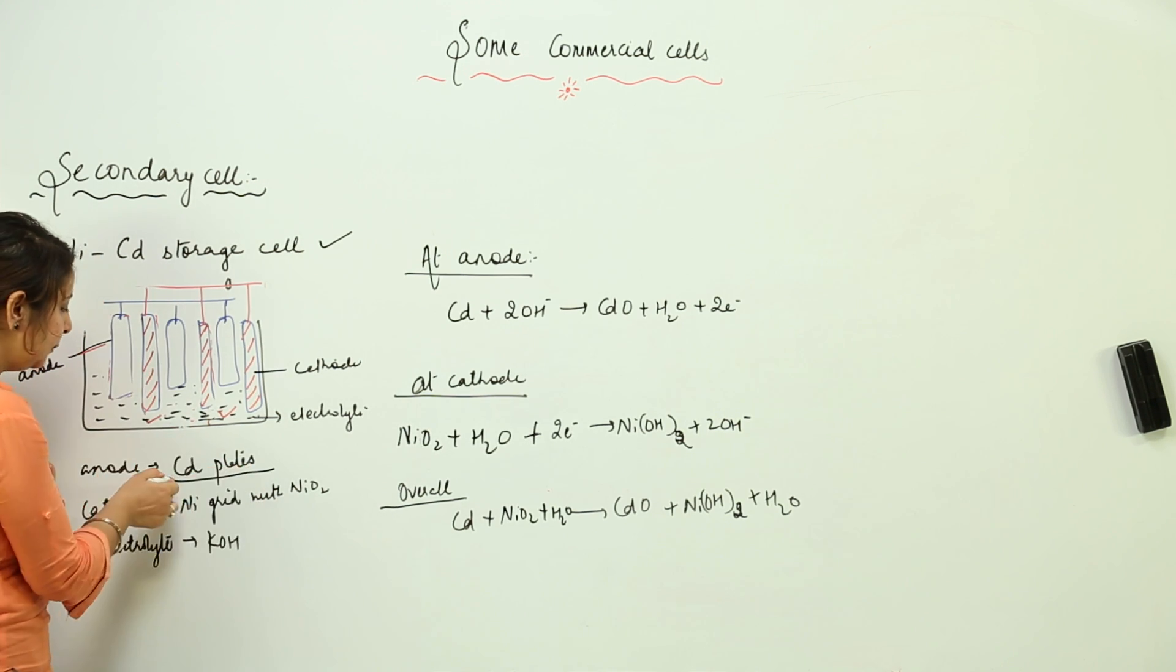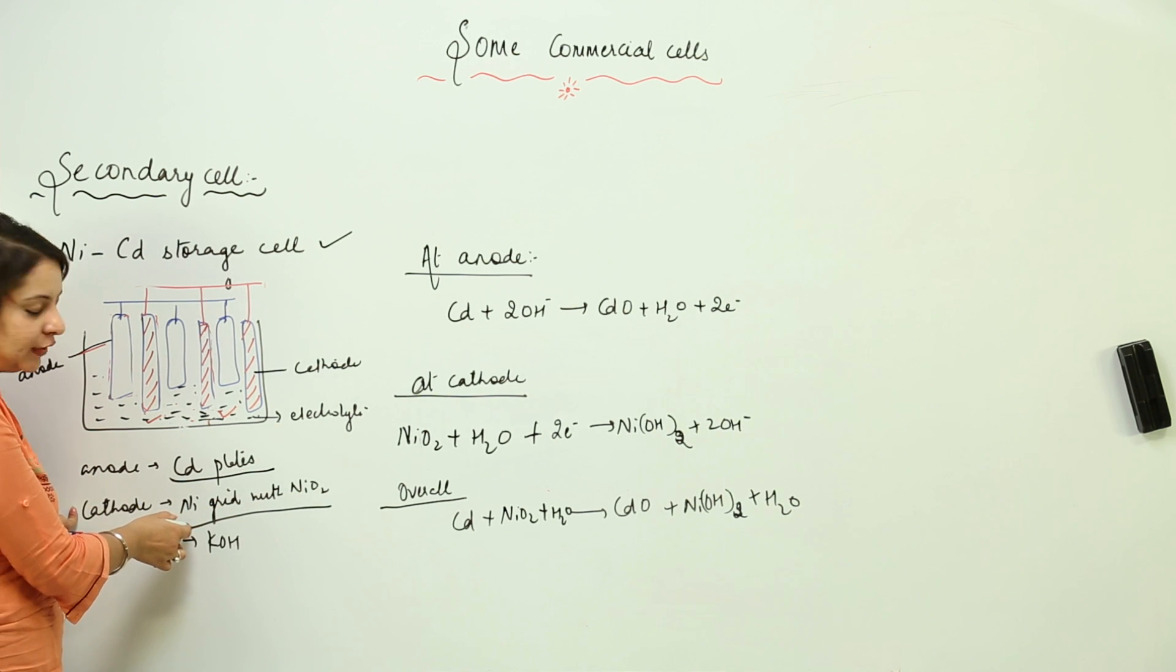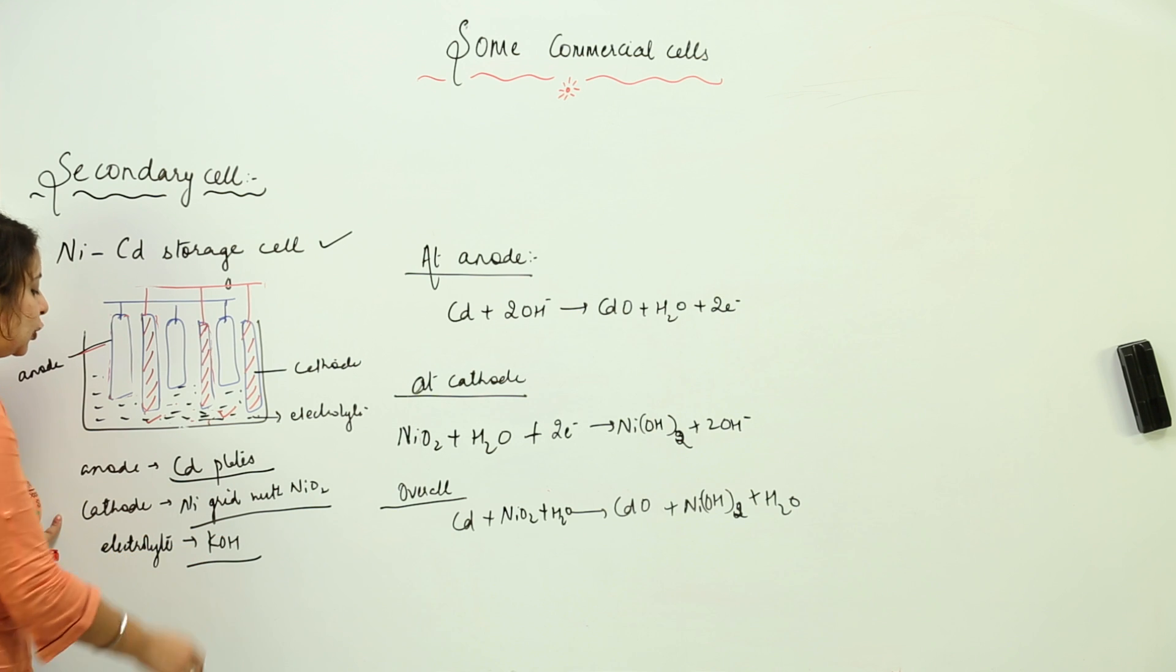The anode is cadmium plates, the cathode is a nickel grid with nickel oxide, and the electrolyte is KOH.